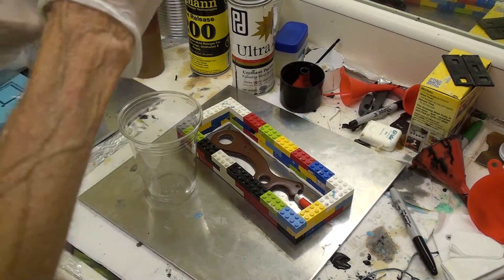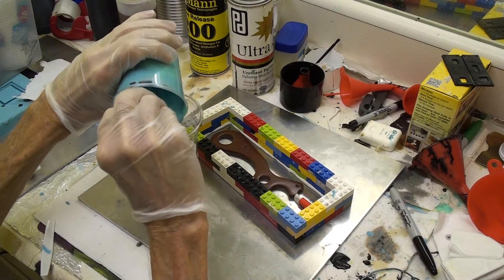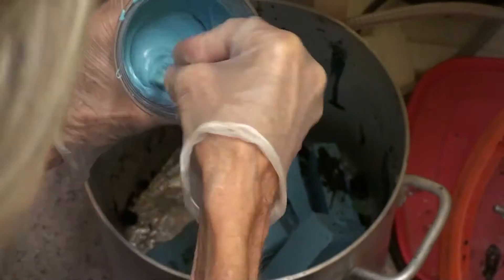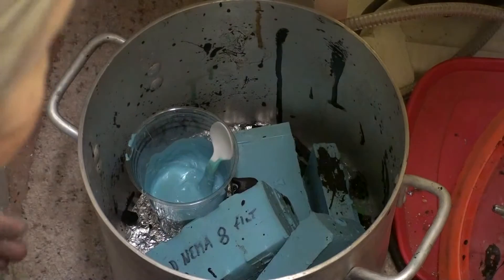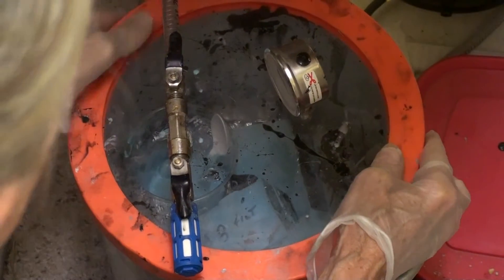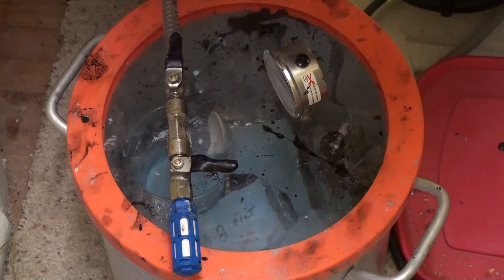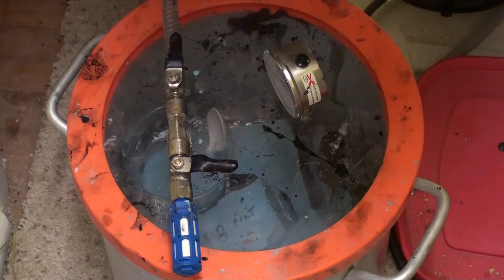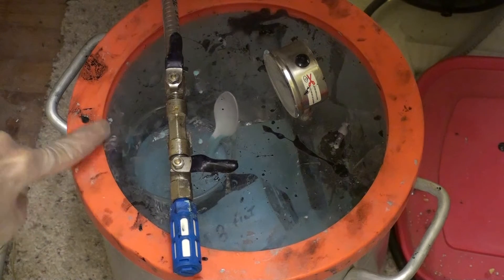Now that I've started mixing, I'm going to transfer the mold rubber to a second container and continue mixing. This prevents any unmixed rubber which was adhering to the sides of the first cup from going into the mold and not hardening, which would create imperfections in the mold that transfer to every part that you make.